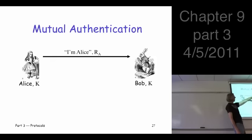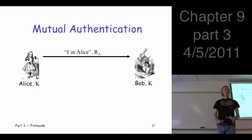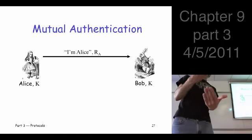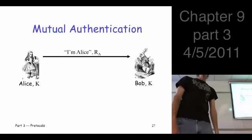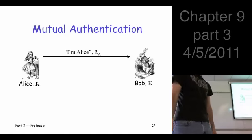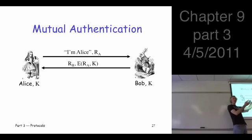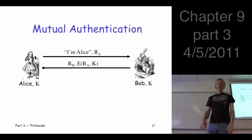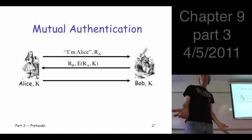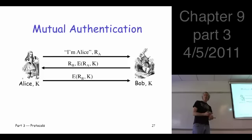So again, they both know the key K. I'm Alice, here's my challenge to you Bob, call it R sub A. What does Bob do? Encrypts it, sends it back, but he also sends his challenge. He says, here's my challenge to you Alice, and here's going to prove to you that I'm Bob. And what's Alice supposed to do with that? Encrypt it and send it back. So do we get to mutual authentication?